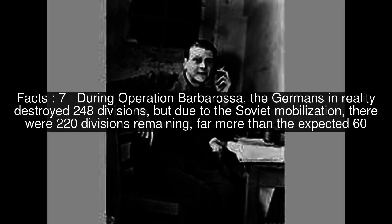During Operation Barbarossa, the Germans in reality destroyed 248 divisions, but due to the Soviet mobilization, there were 220 divisions remaining — far more than the expected 60.